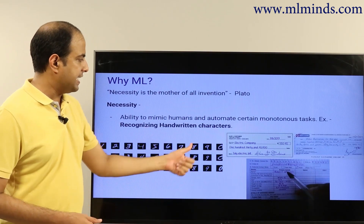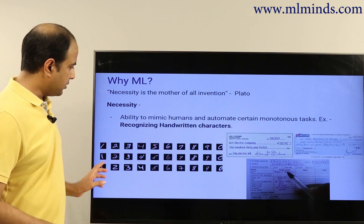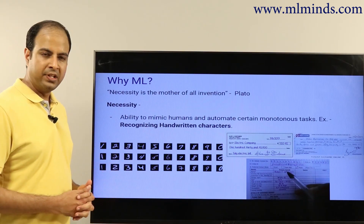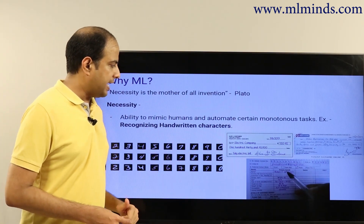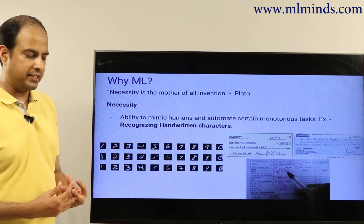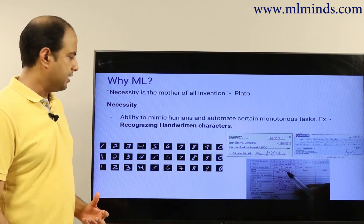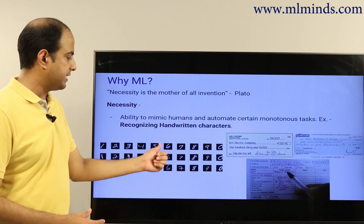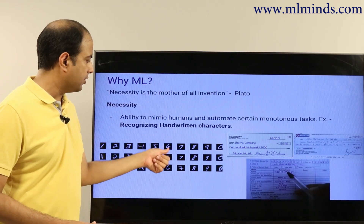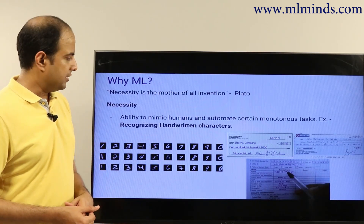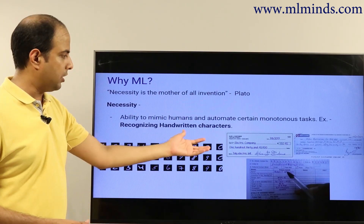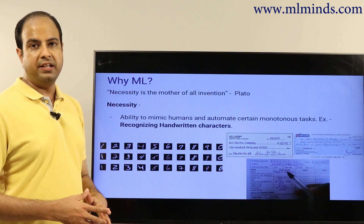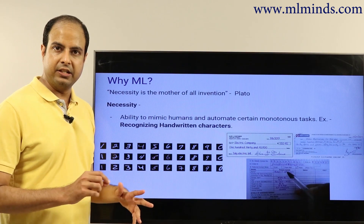One of those tasks is recognizing handwritten characters. This is a snapshot of a popular dataset called the MNIST numbers dataset — these are handwritten digits. The idea is to design a machine learning model that can automatically identify whether a number is five, six, seven, and so on. This has lots of applications across various sectors.